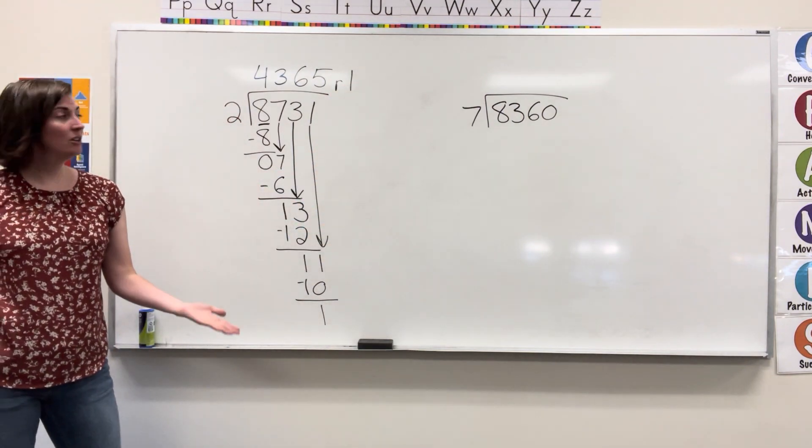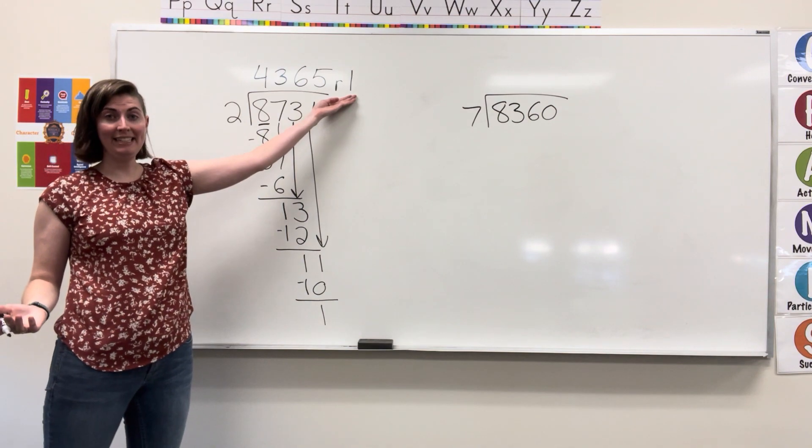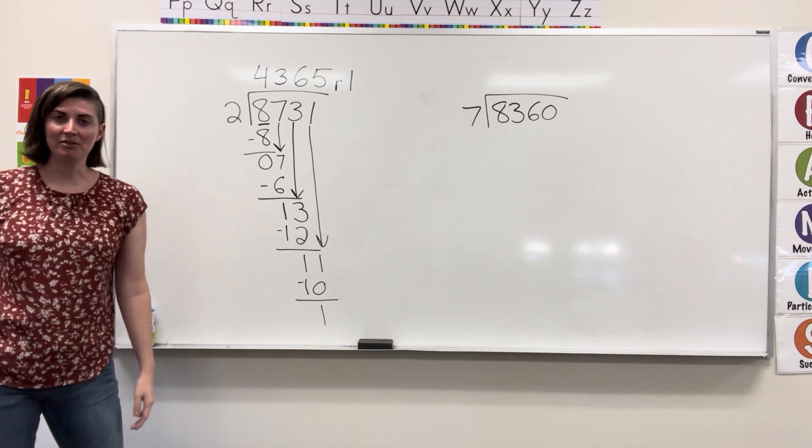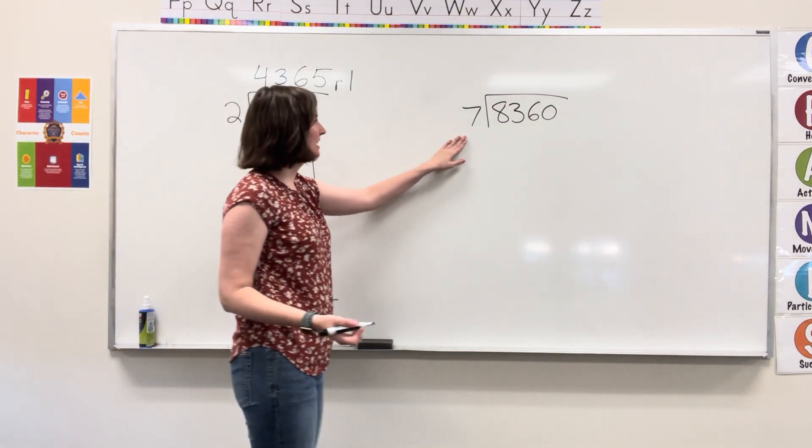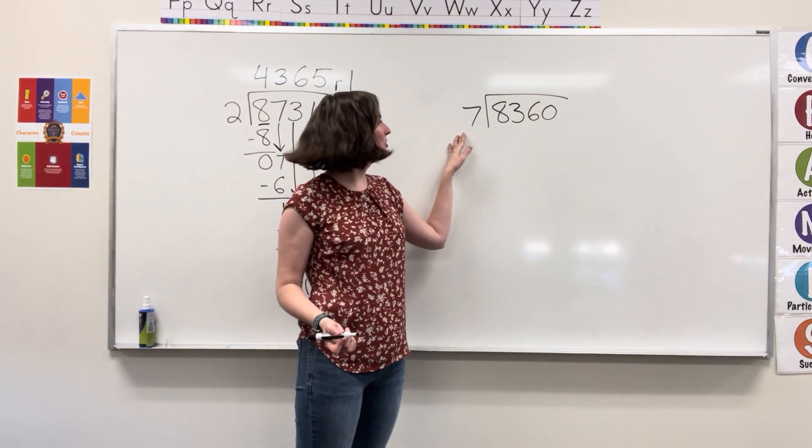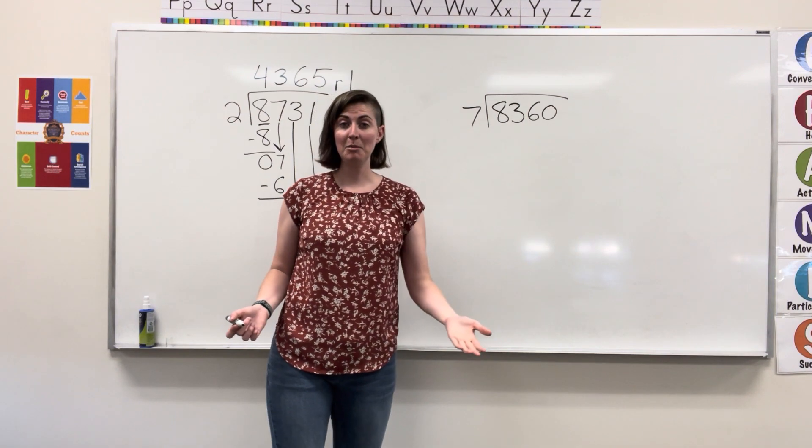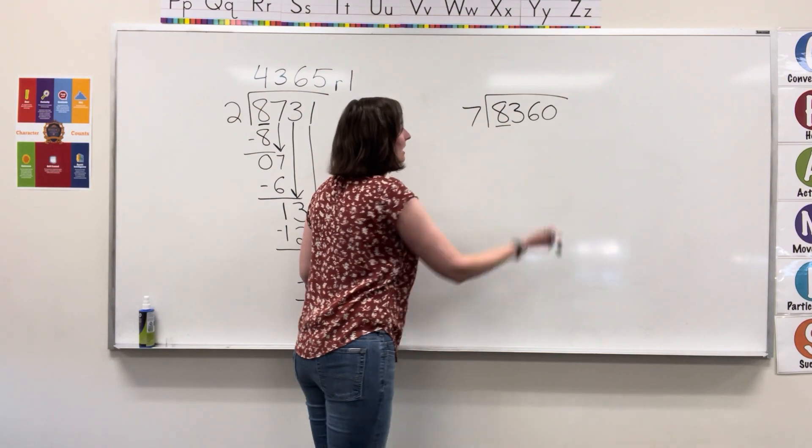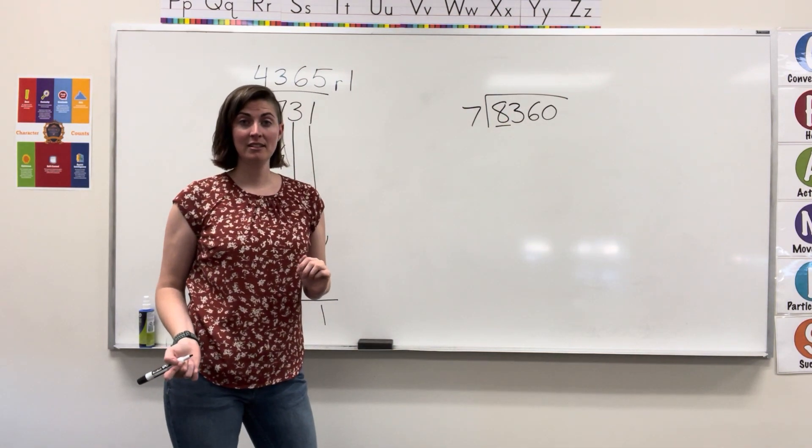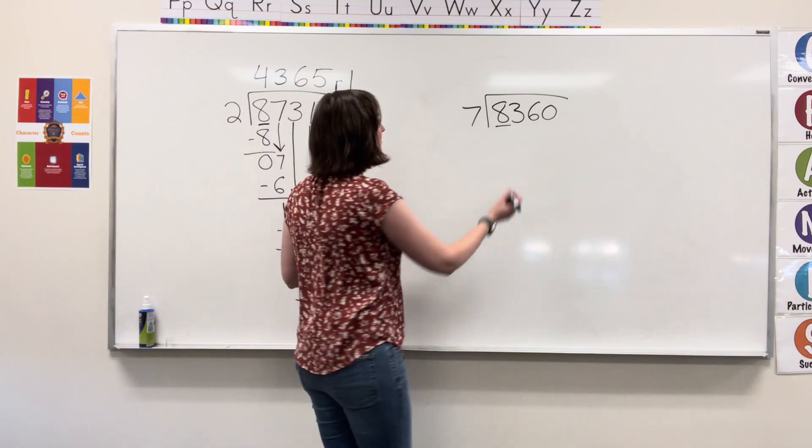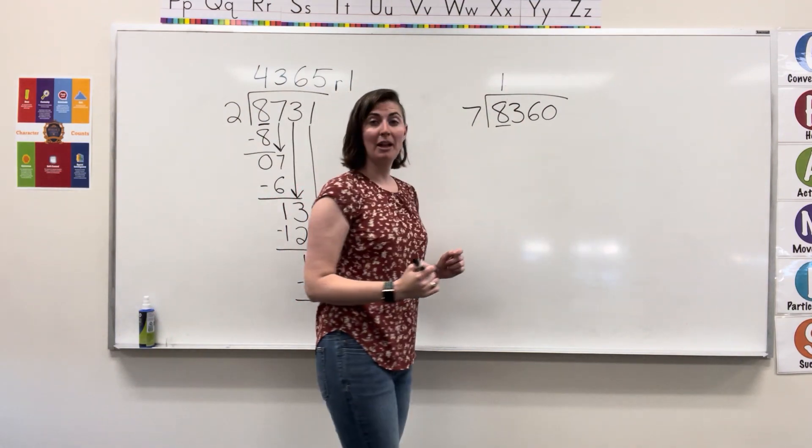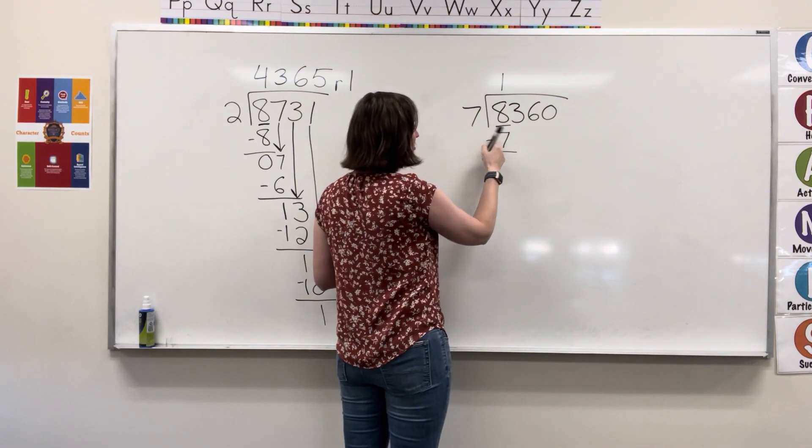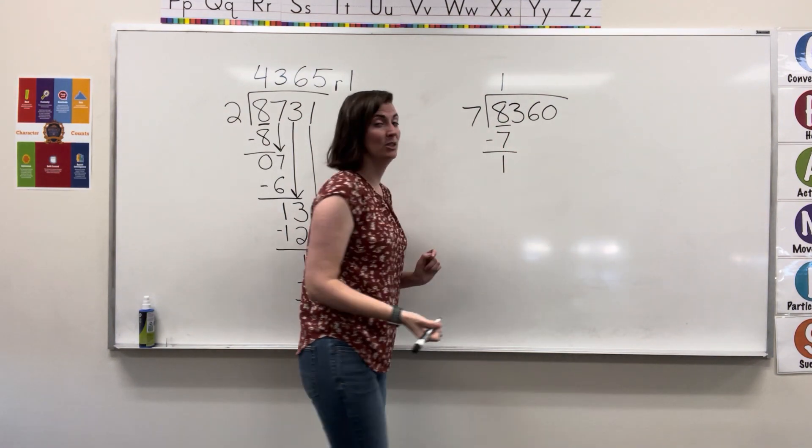Whatever you have left over, make sure you write it next to your quotient. Let's look at another example of long division. Here I have seven being divided into 8360. Again I'm going to check the first digit of my dividend. Does seven fit into eight? Yes, it fits in one time. Now I multiply. One times seven gets me seven. I subtract. Eight minus seven is one.